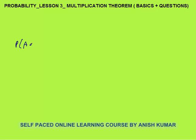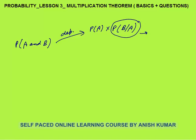The theorem says that the probability of A and B happening together depends on whether the events are dependent or independent. When the events are dependent, this will be equals to probability of A into probability of B when A has already happened — this slash means probability of B when A has already happened. This part is called conditional probability. Conditional probability is the simple concept that you need to calculate the probability of B given that A has already happened. It means events are dependent — happening of one event depends on the happening of the other.